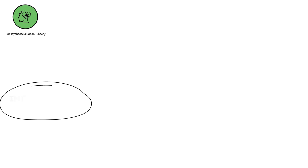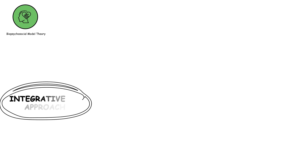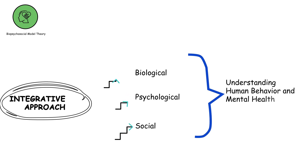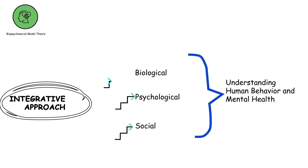Biopsychosocial model theory is an integrative approach that considers biological, psychological, and social factors in understanding human behavior and mental health. It recognizes that biological processes, psychological factors, and social influences all interact to shape behavior and well-being.